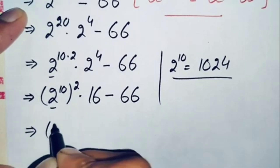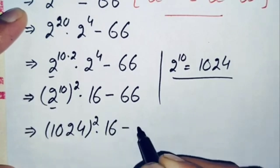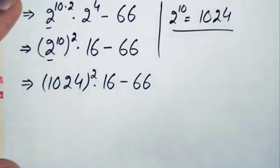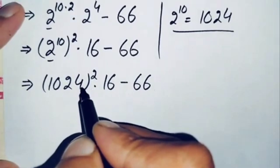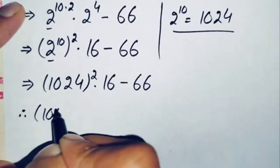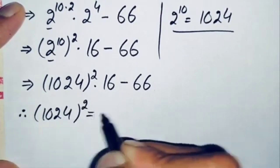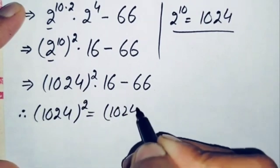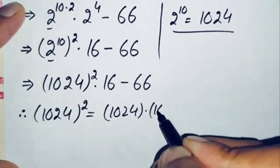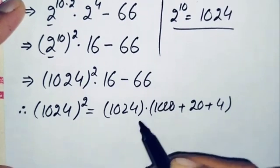Replacing 2 raised to power 10 with 1024, this implies it will become 1024 whole squared, times 16, minus 66. Now we will try to find out the value of 1024 whole squared. There is a square over this number, so we can write this as 1024 times 1024.